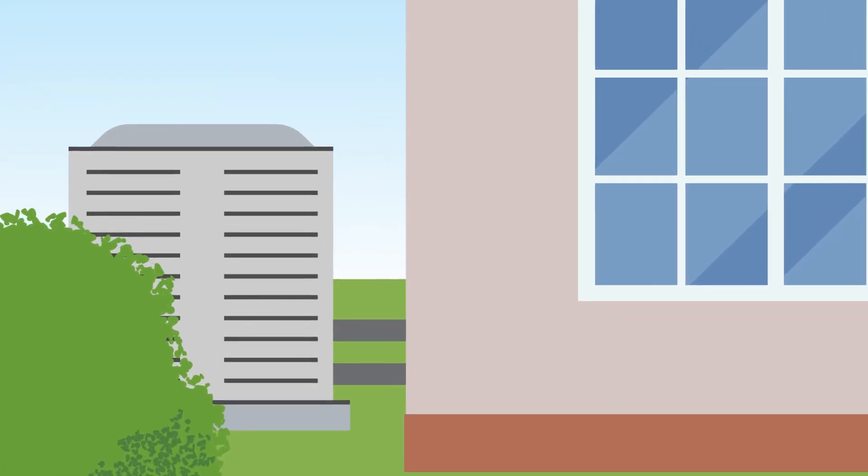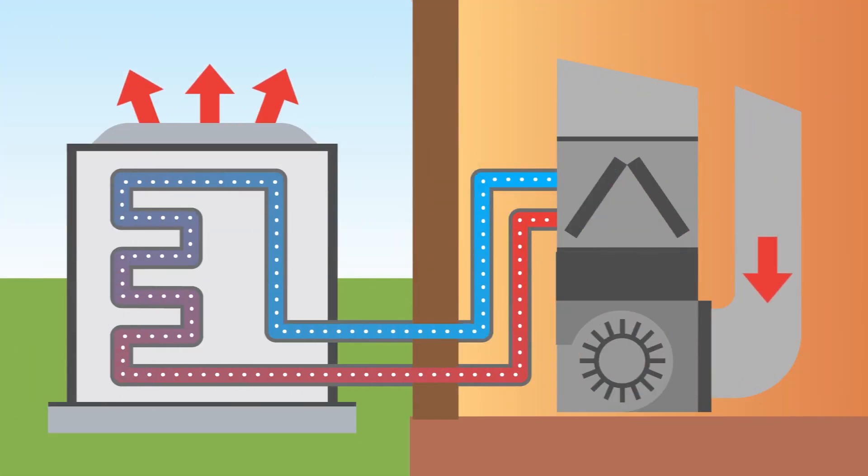The heat pump saves energy and keeps your home comfortable by moving heat rather than producing it. In hot summer months, it works like an efficient air conditioner and removes excess heat from your home.